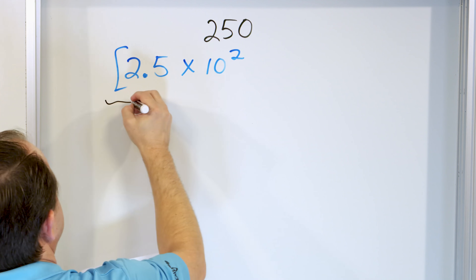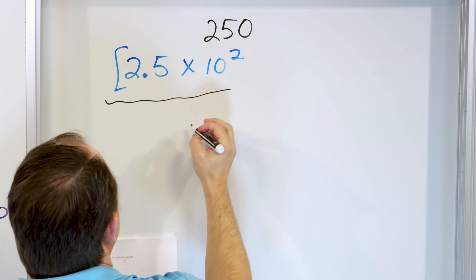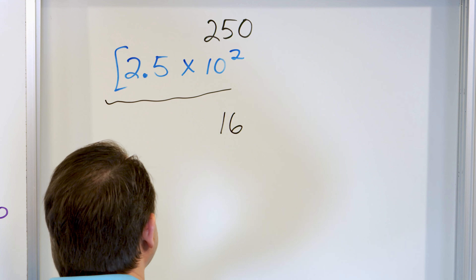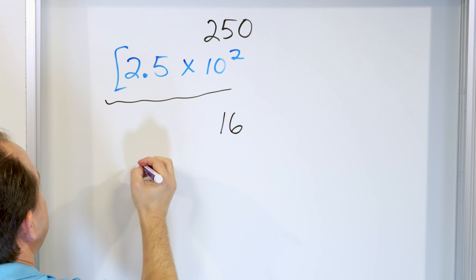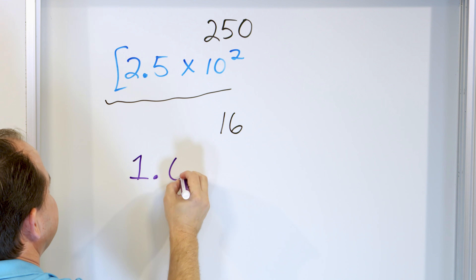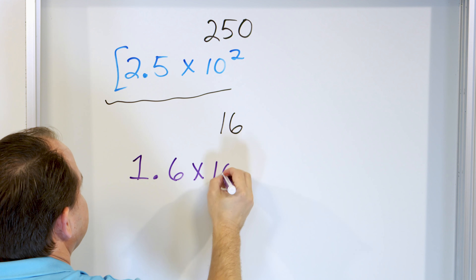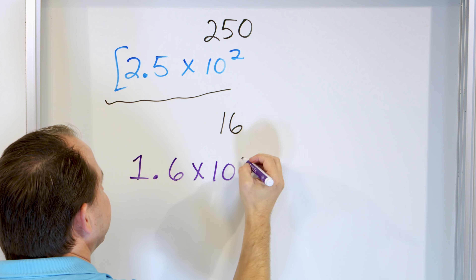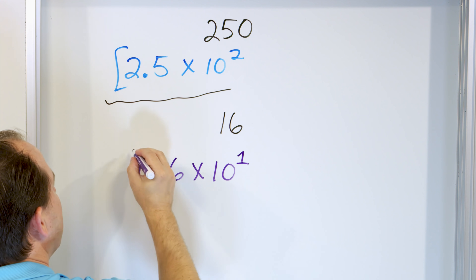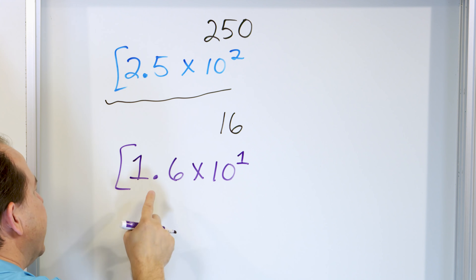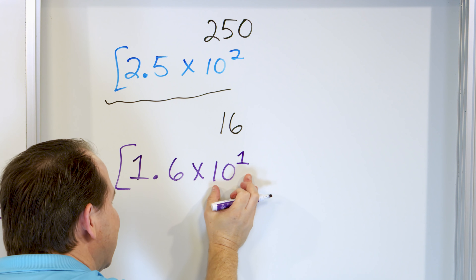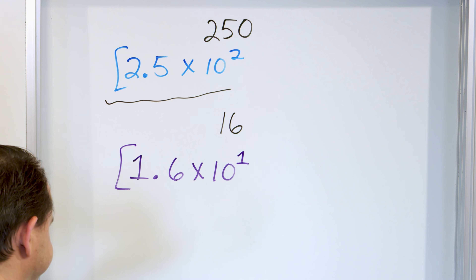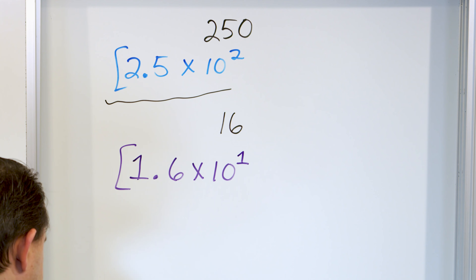What about the number 16? Take the first digit, put a decimal, take the second digit — so you have 1.6 times 10 to the power of what? If the decimal were here, it only needs to move one position, so it's times 10 to the 1. You're taking 1.6 times 10, which moves it and makes it 16.